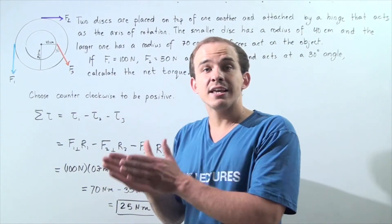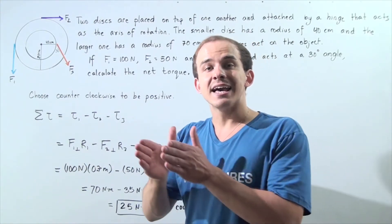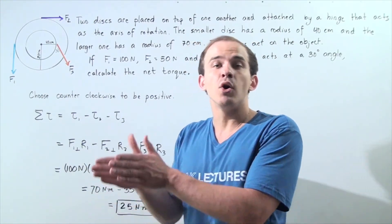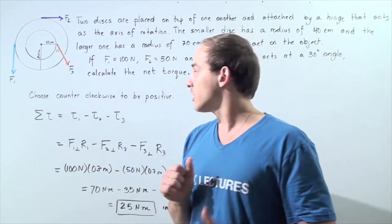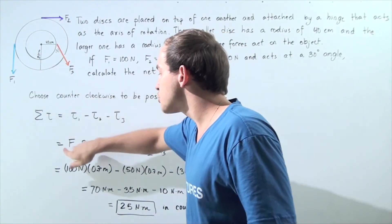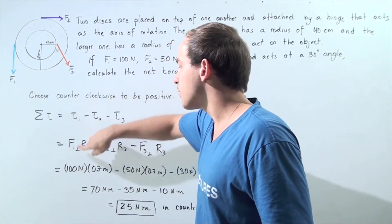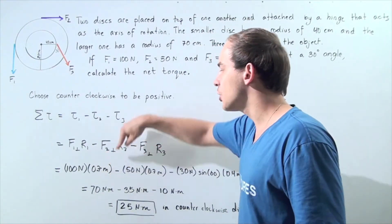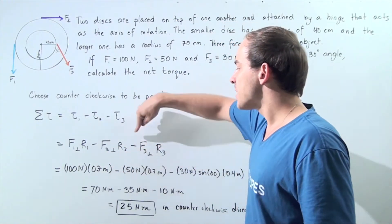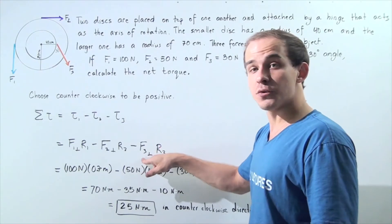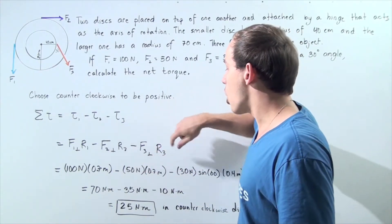Torque is simply the force that acts at a perpendicular angle multiplied by the lever arm. So we have F1 perpendicular times R1 minus F2 perpendicular times R2 minus F3 perpendicular times R3.